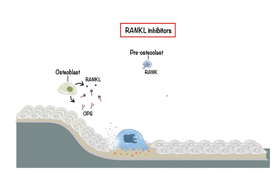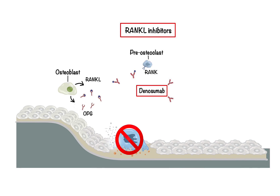RANKL inhibitors, such as denosumab, are designed to mimic the action of OPG. Denosumab is a monoclonal antibody that specifically targets and binds to RANKL, effectively neutralizing it and preventing it from interacting with RANK on osteoclast precursor cells. By blocking this interaction, denosumab inhibits the maturation and activation of osteoclasts, ultimately reducing bone resorption. As a result, there is a decrease in overall bone resorption activity, leading to a better balance between bone formation and resorption, contributing to increased bone mineral density and a reduced risk of fractures for individuals with osteoporosis.